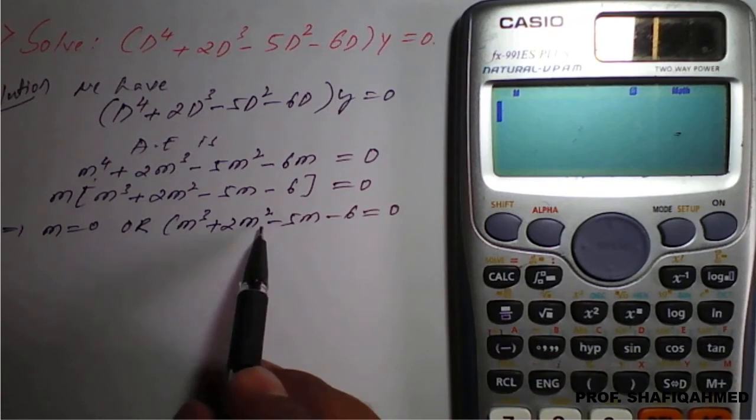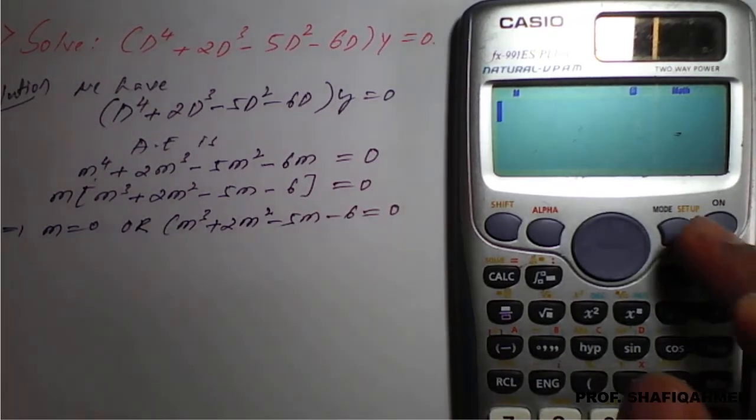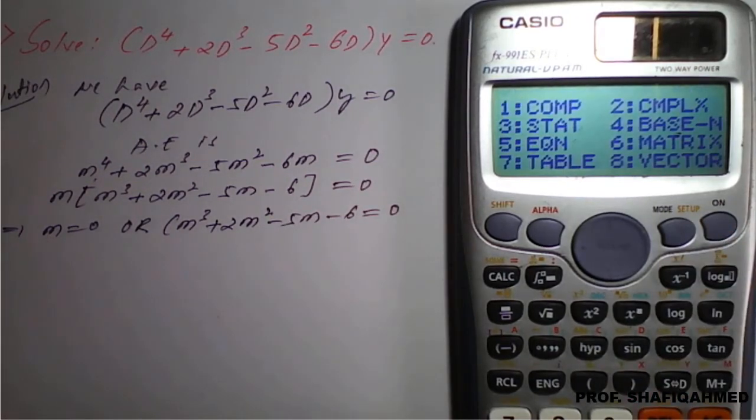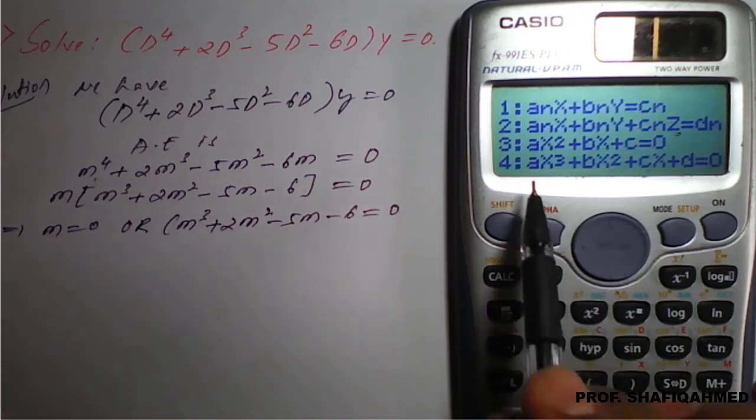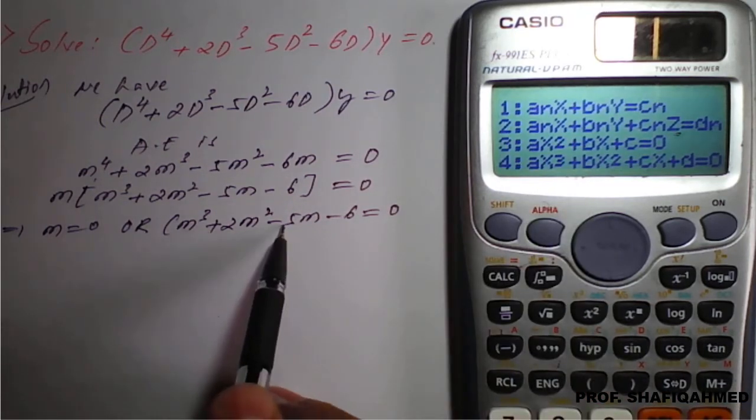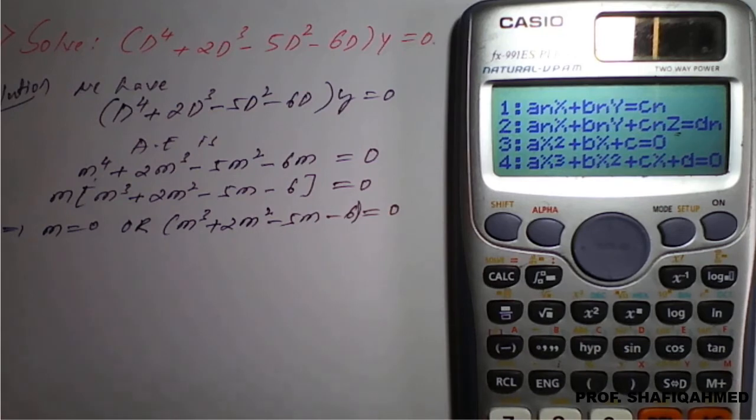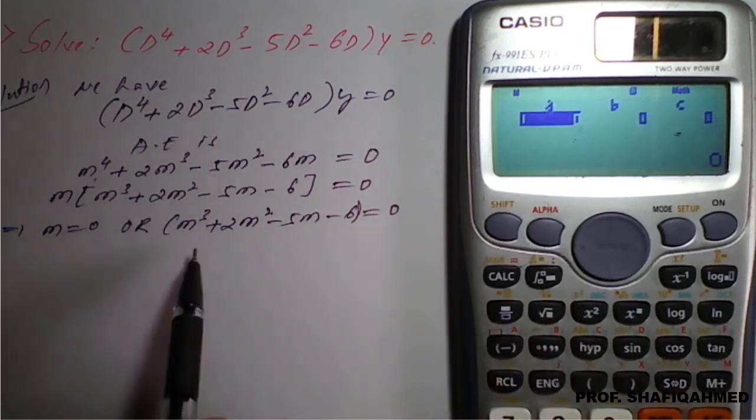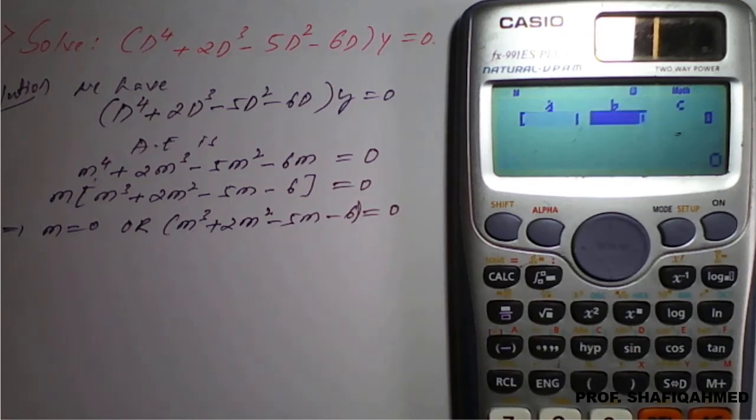Now for this we will go for the roots. Option mode, option 5, then cubic equation because this part is cubic. We will go for cubic equation, that is option 4, then coefficient: m³ coefficient is 1, then 2, then minus 5 and minus 6.